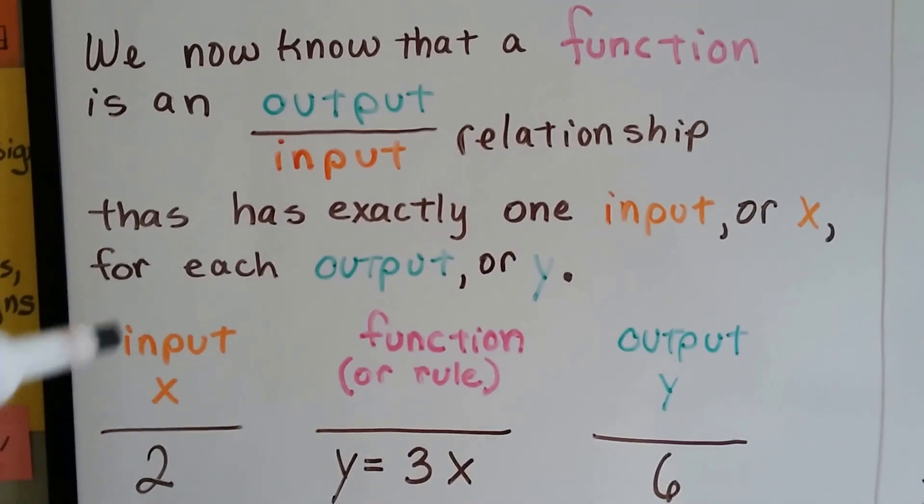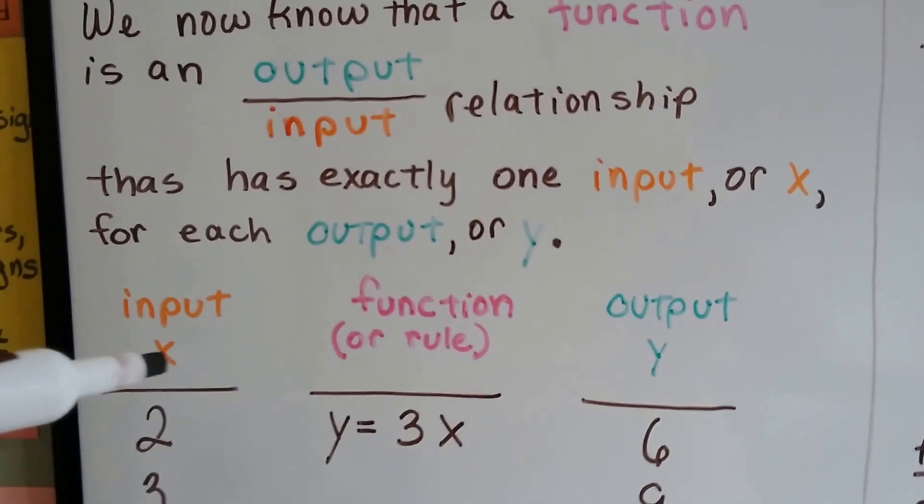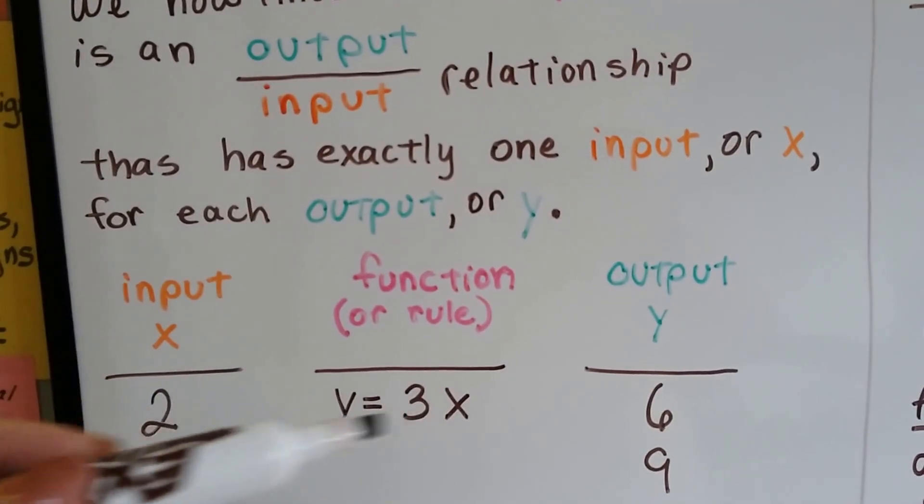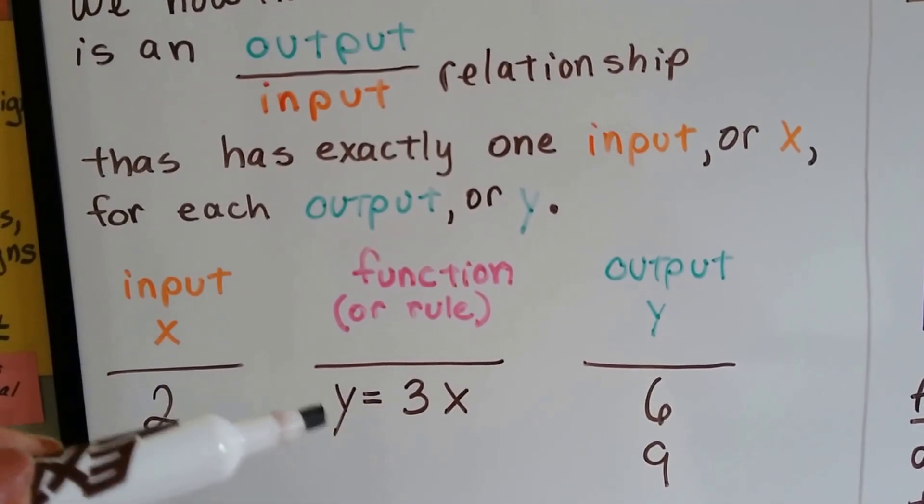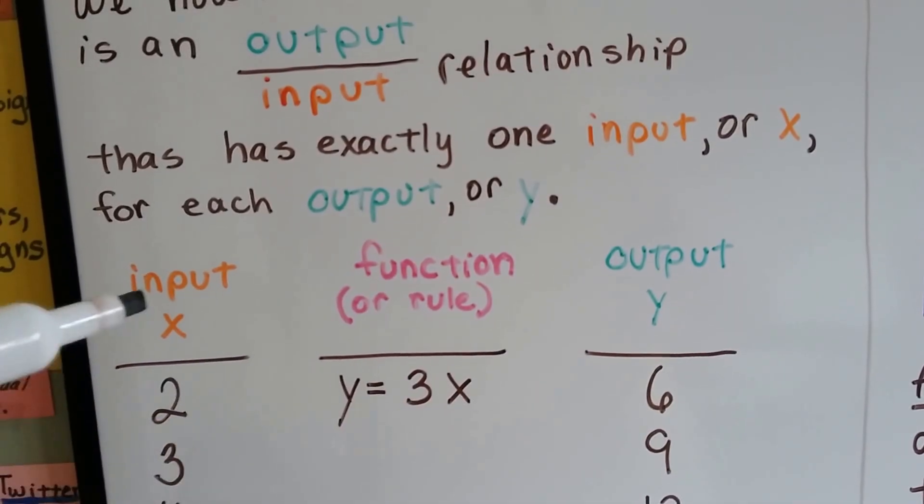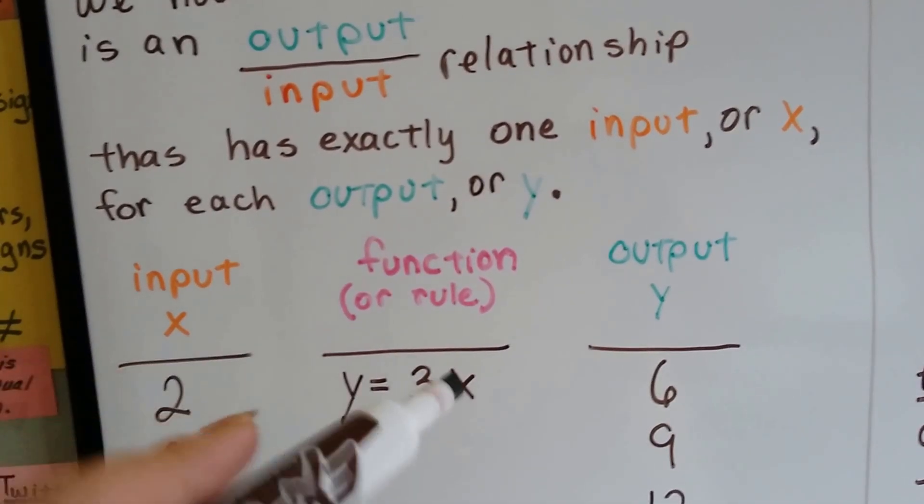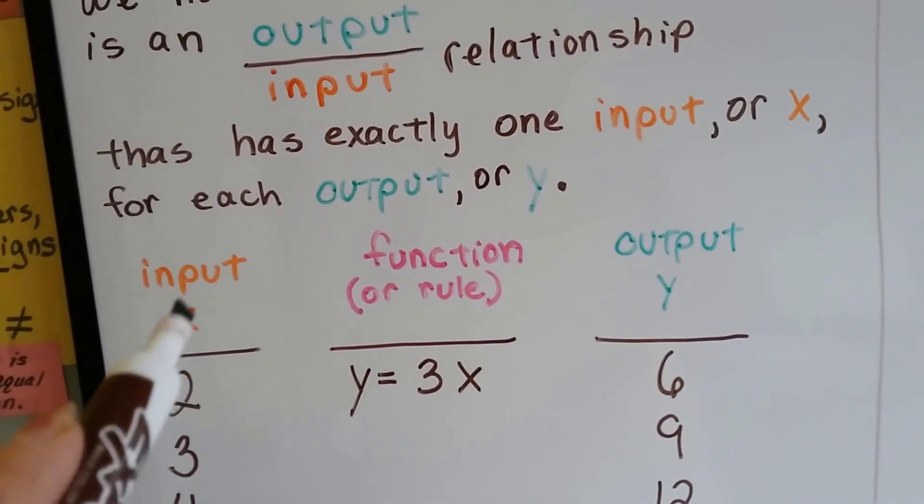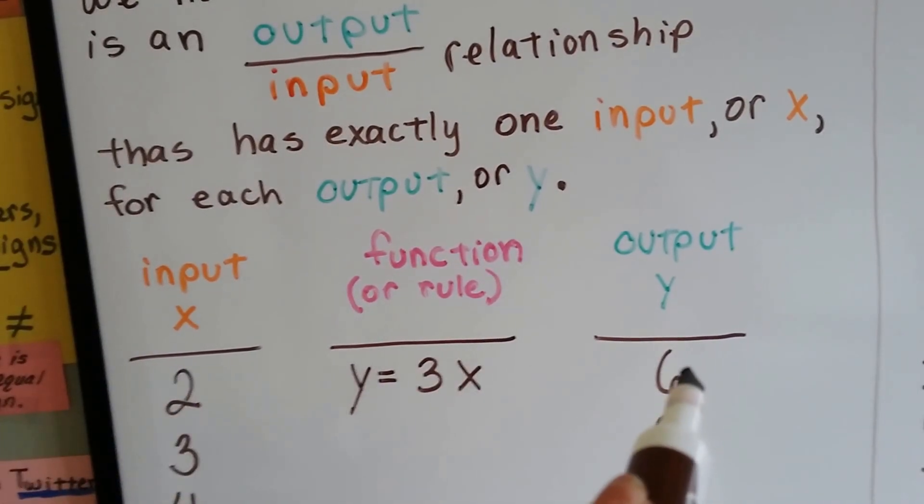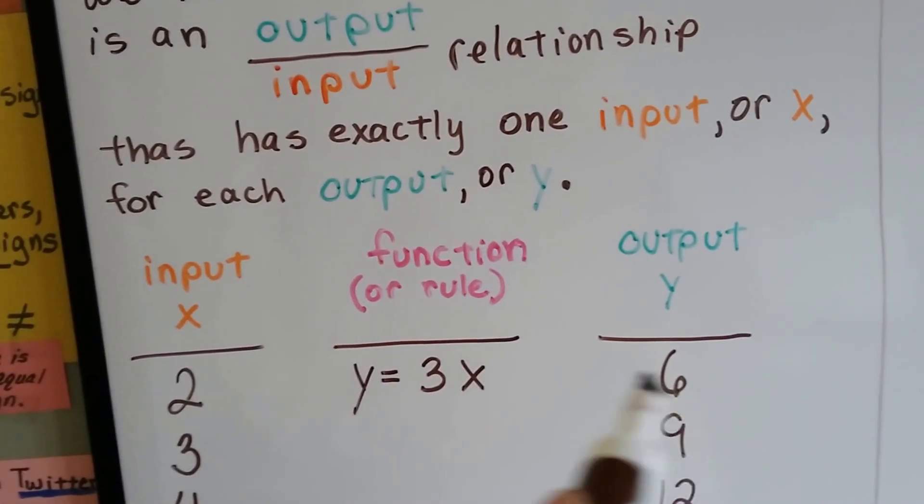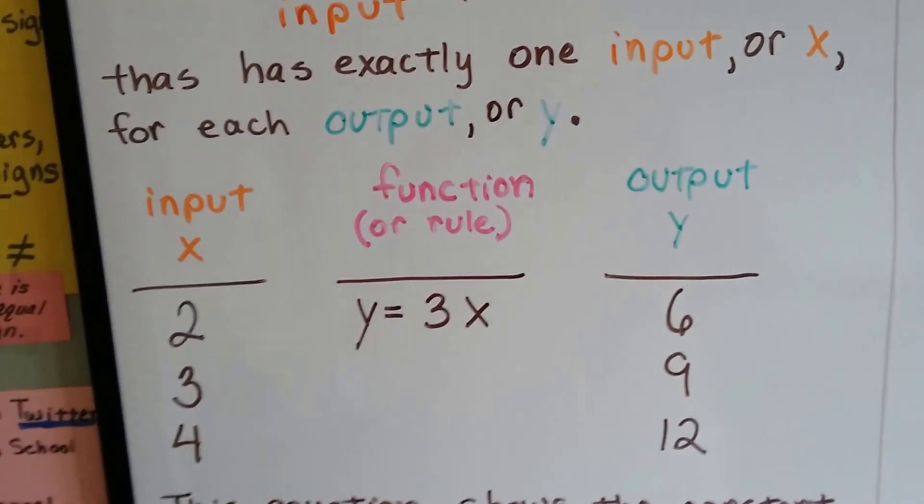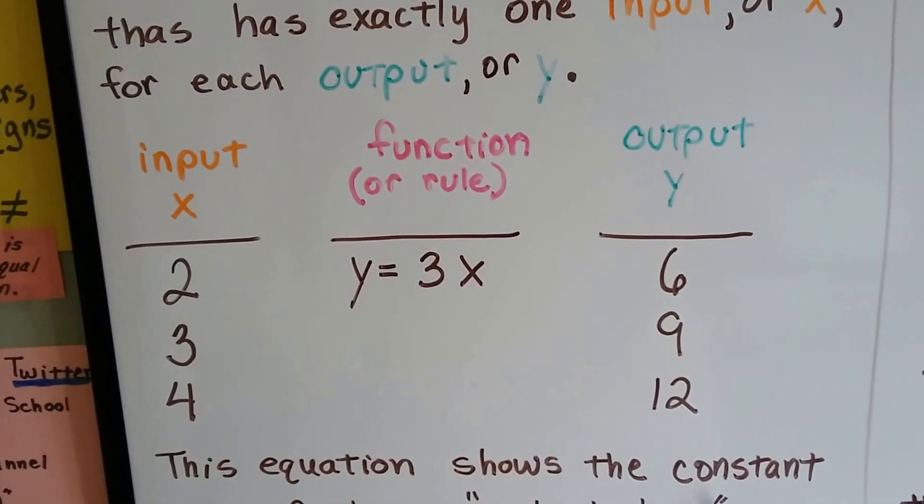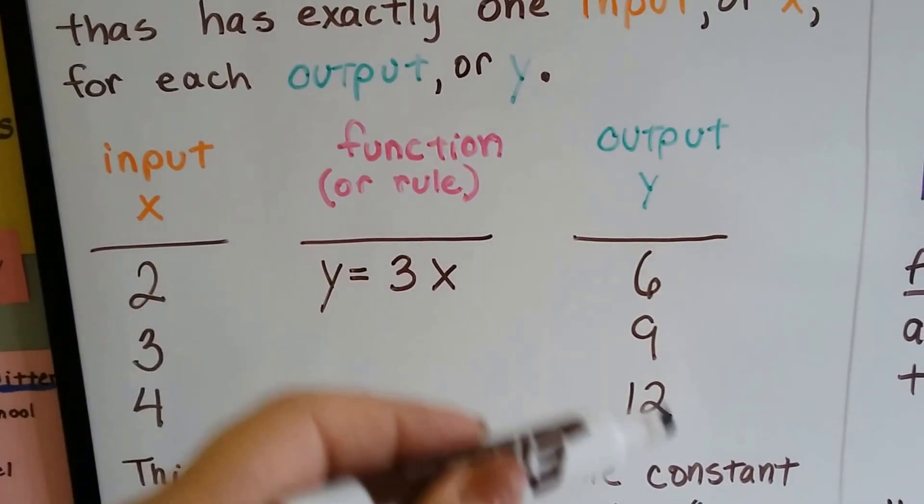So if our input, which is x, is 2, and our function, our equation with two variables, is y equals 3x, when we put the 2 as x here, that's going to be 3 times 2 instead of 3 times x, because 2 is taking the place of x. That's going to give us an output of 6. That's what y is going to stand for. And each separate number that we put in is going to have one output. For each input is a particular output.